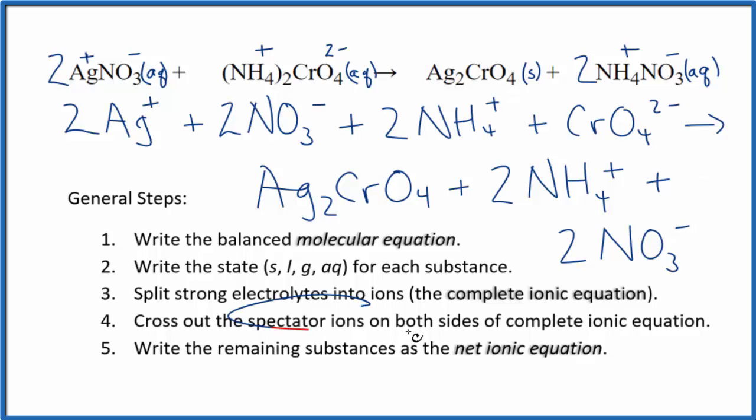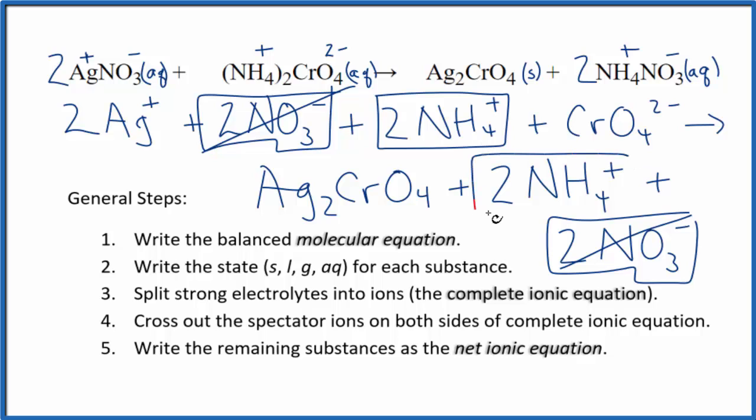So at this point, we can cross out spectator ions. They're on both sides. So I have my reactants here, and then down here, my products. I see there are two nitrate ions here. In the products, we also have two nitrate ions. These are spectator ions. Cross them out. Two ammonium ions right here, and again in the products. Spectator ions get crossed out.